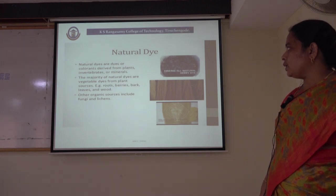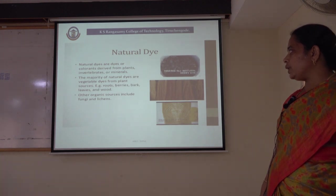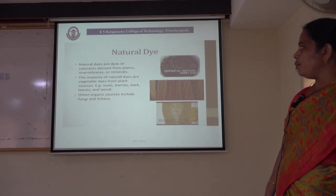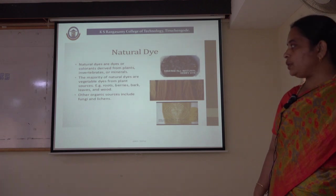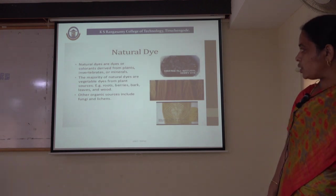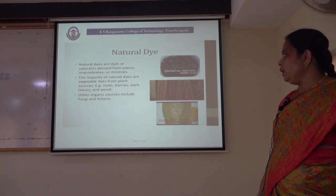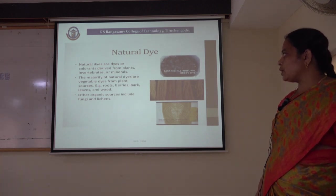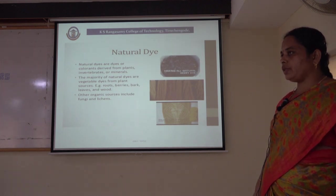Coming first to natural dyes — natural dyes are colorants derived from plants, invertebrates or minerals. It means the natural dyes can be derived from plant origin, animal origin or from certain mineral origin. The majority of natural dyes are vegetable dyes from plant sources. For example, natural dyes can be extracted from the roots of the plant, certain berries, leaves and wood of the plant.